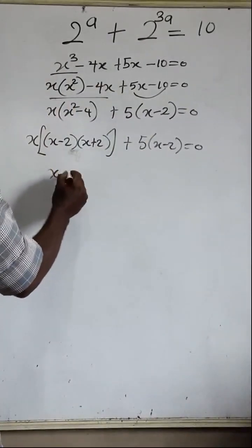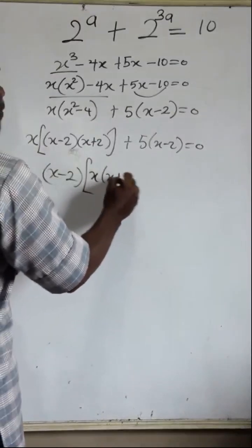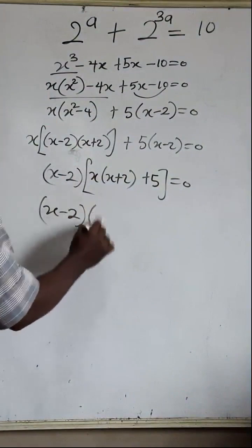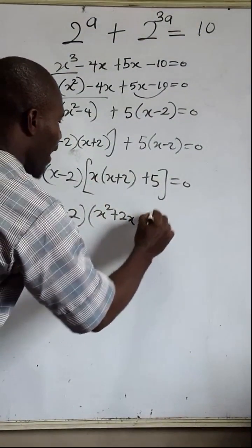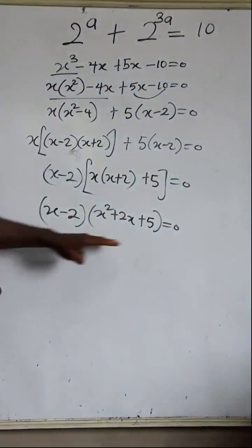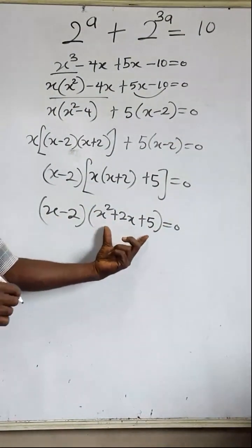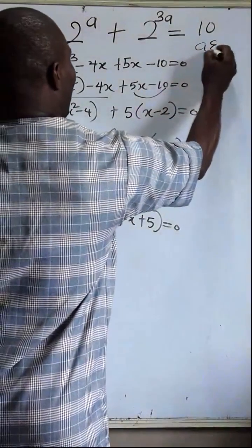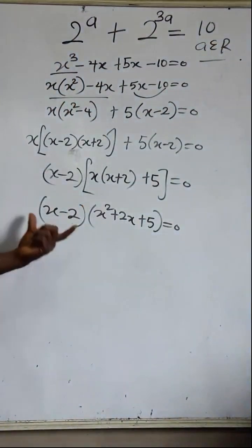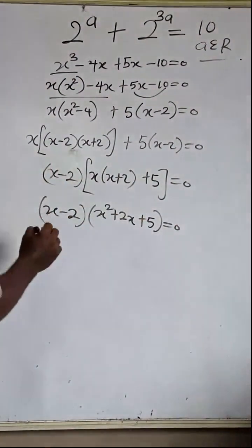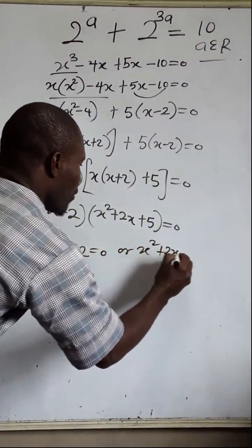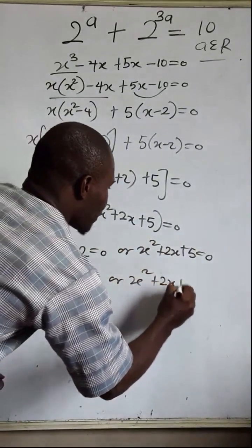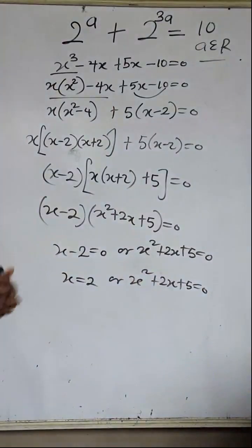From all these terms, (x minus 2) is the common factor. Bringing it out: (x minus 2)[x(x + 2) + 5] = 0, which gives (x minus 2)(x squared + 2x + 5) = 0. This gives us two equations: one yields one root value, and the other yields two root values, which may be complex numbers.